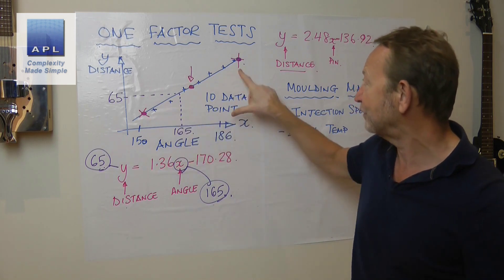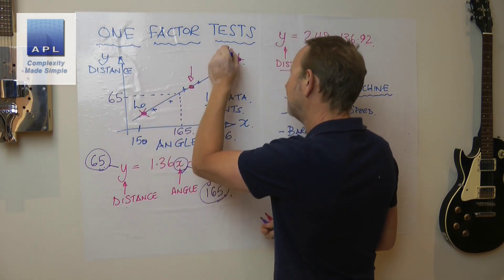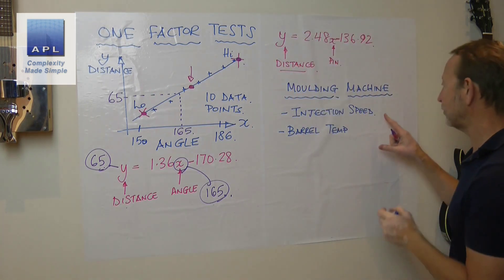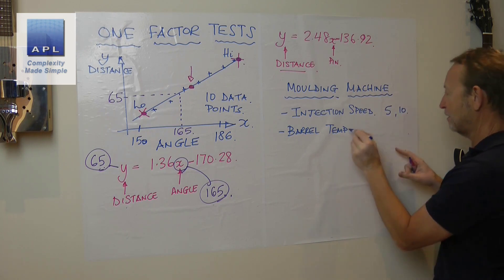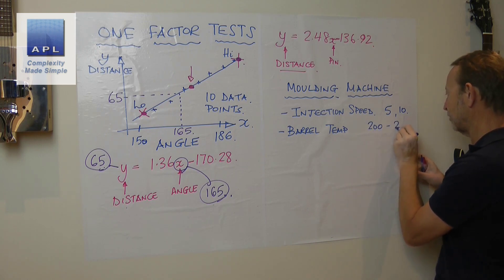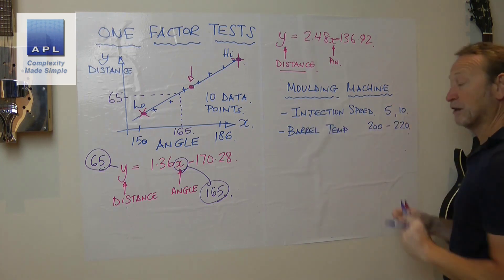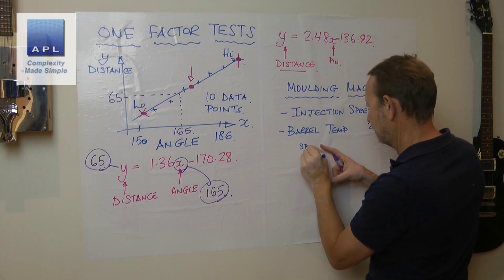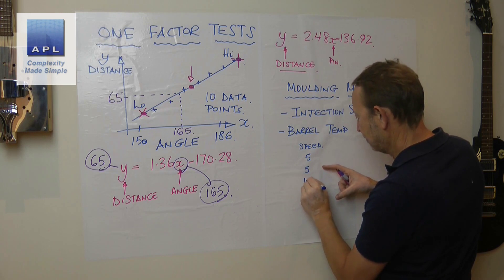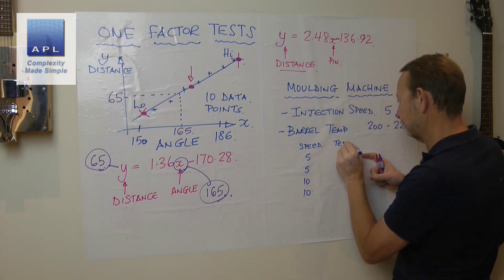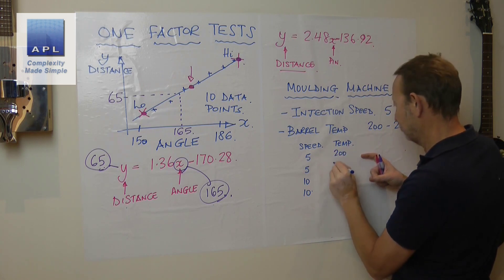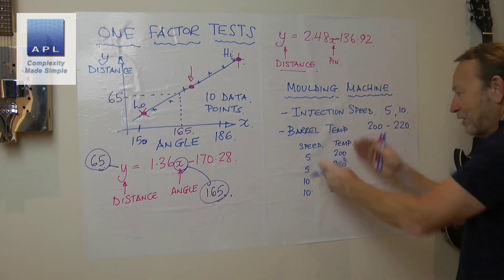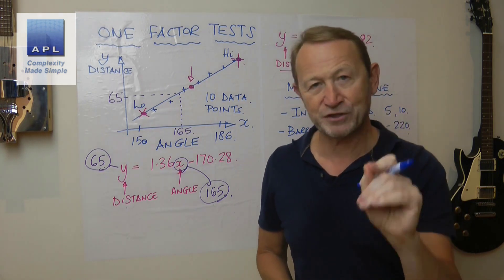Now, what would a DOE get you to do? First of all, a DOE gets you to use this technique: it gets you to go low and high, then fills the gap with the equation - it fills the gap with maths. So let's say injection speed was going to be at 5 and 10, and barrel temperature was going to be 200 to 220, high and low, high and low. What would a DOE get you to do? It'll get you to test in a specific pattern, moving both variables at the same time.